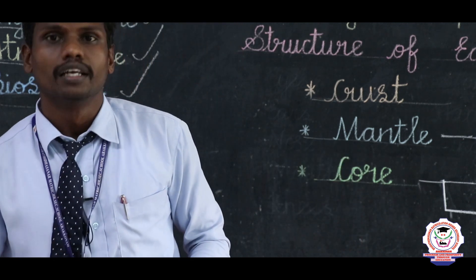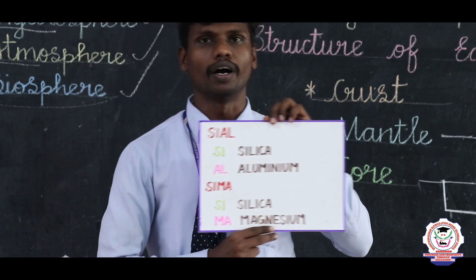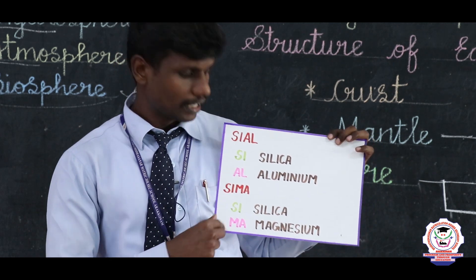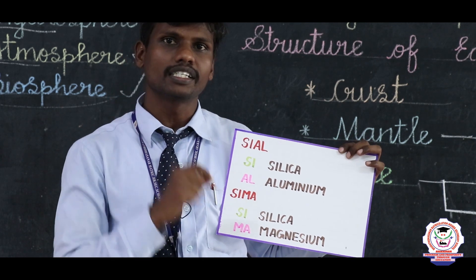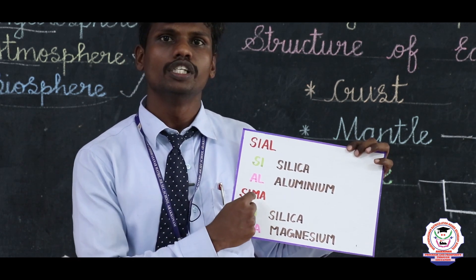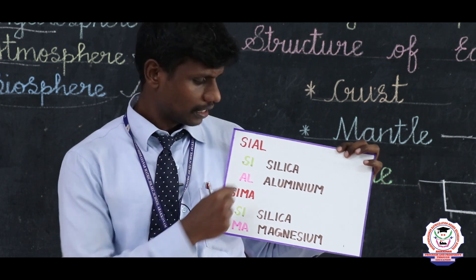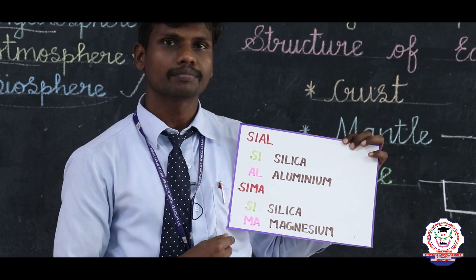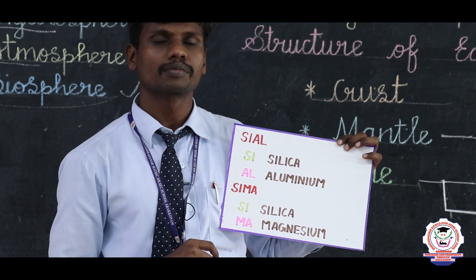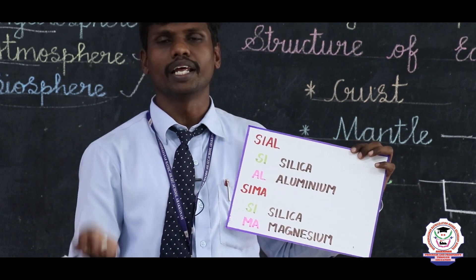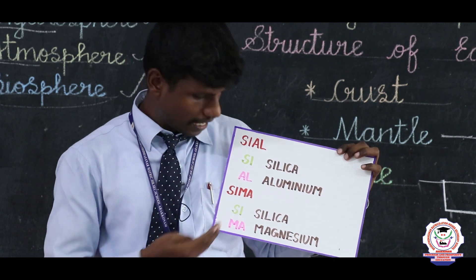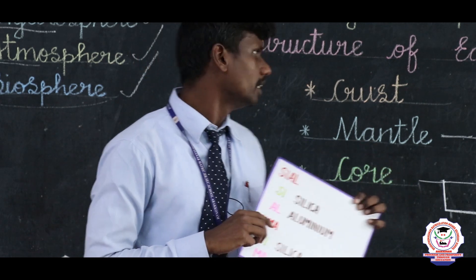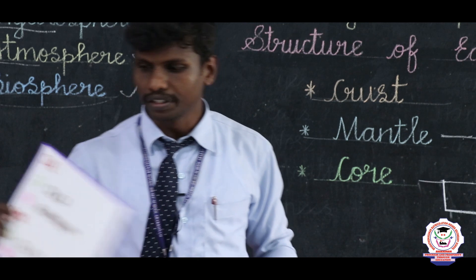The crust is also presented in terms of Sial and Sima. What is meant by Sial and Sima? These are mineral composites. Sial — the expansion is Si for silica and Al for aluminum. Sima — Si for silica and Ma for magnesium. So these are the minerals present in the crust, which is why we can get plenty of minerals from the crust.